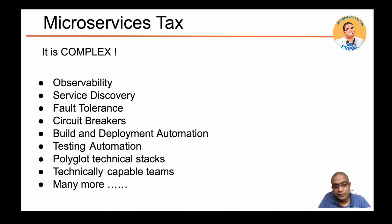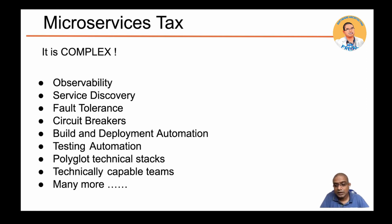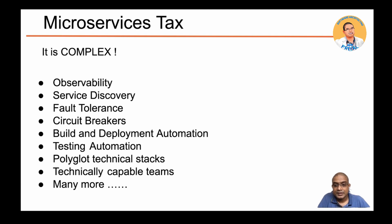With microservices you can use a polyglot technology stack — unlike a monolith where you might be stuck with Java or .NET. For example, if you have a highly memory-intensive service, you can pick a language and technology stack that better supports memory-intensive applications. However, your development teams and DevOps teams must be capable of adapting to and learning new technologies.